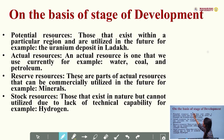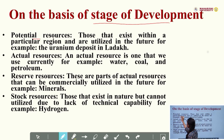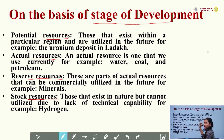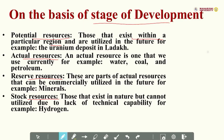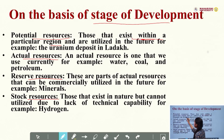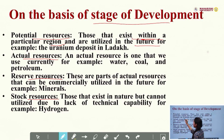Next, on the basis of stage of development, natural resources are classified into potential resource, actual resource, reserve resource, and stock resource. Potential resources are the resources that exist within a particular region and are to be utilized in the future. For example, uranium deposits in Ladakh are known as potential resources.